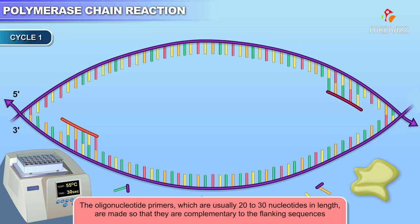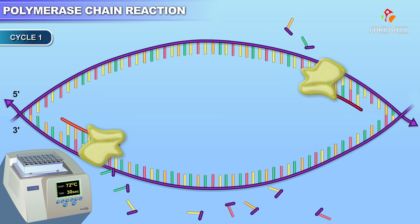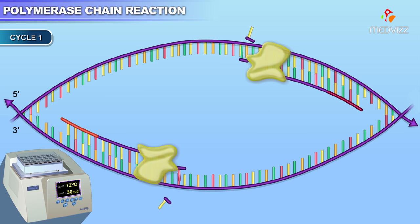The oligonucleotide primers, which are usually 20 to 30 nucleotides in length, are made so that they are complementary to the flanking sequences. The temperature is then brought to 72 degrees Celsius, which is the optimal reaction temperature for Taq DNA polymerase.